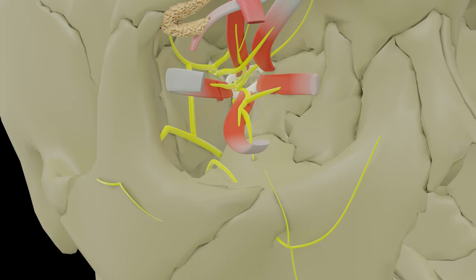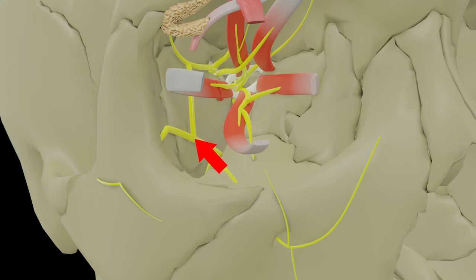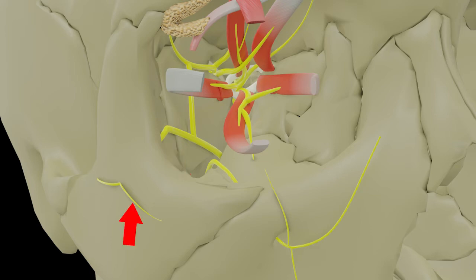These nerves are discussed in detail in another video on the maxillary nerve in the channel. Another nerve seen in the orbit, also a branch of the maxillary nerve, is the zygomatic nerve. It enters the orbit through the inferior orbital fissure, runs along the lateral wall of the orbit, and gives a communicating branch to the lacrimal nerve carrying secretomotor fibers for the lacrimal gland. It then enters the zygomatic bone and divides into two terminal branches: the zygomaticofacial and zygomaticotemporal branches.